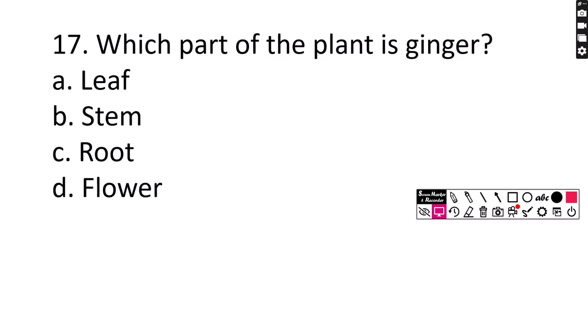Number 17. Which part of the plant is ginger? A. Leaf, B. Stem, C. Root, D. Flower. Correct answer is option C, Root.